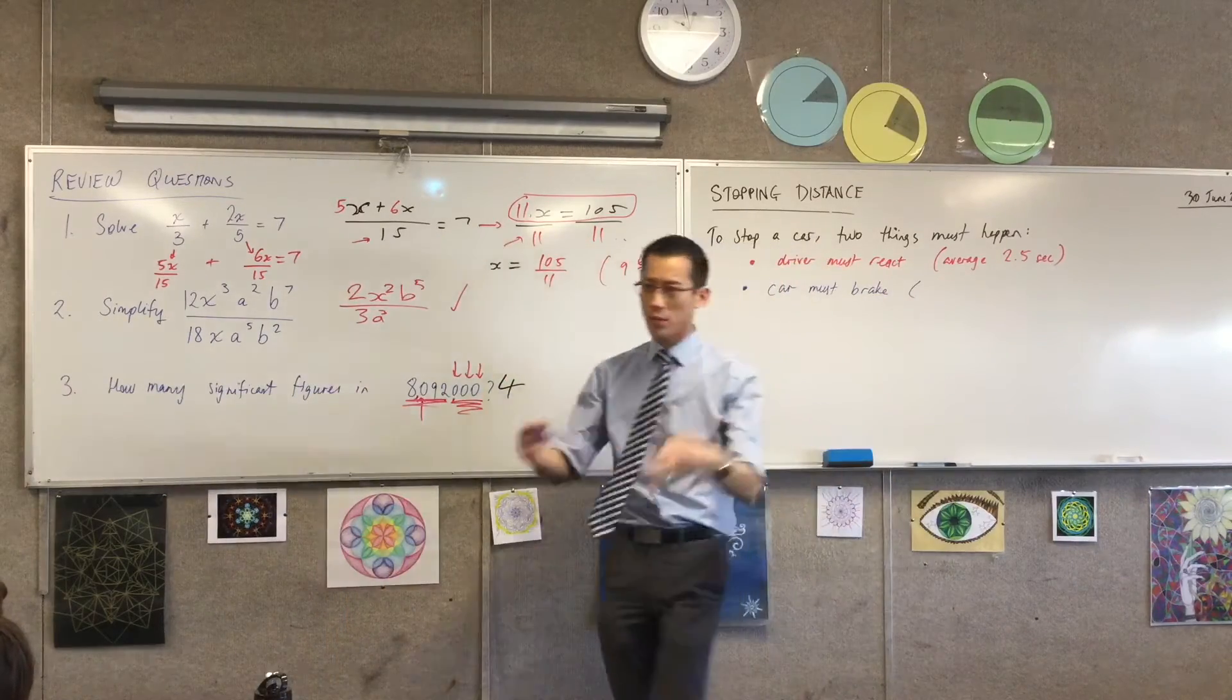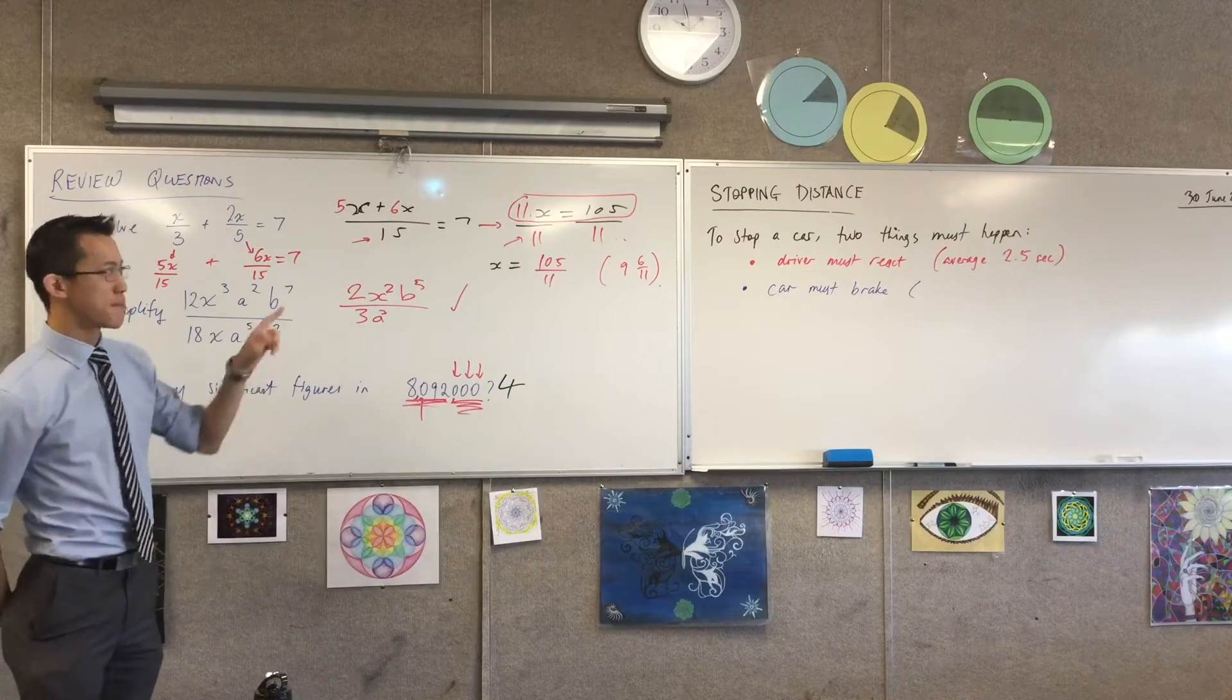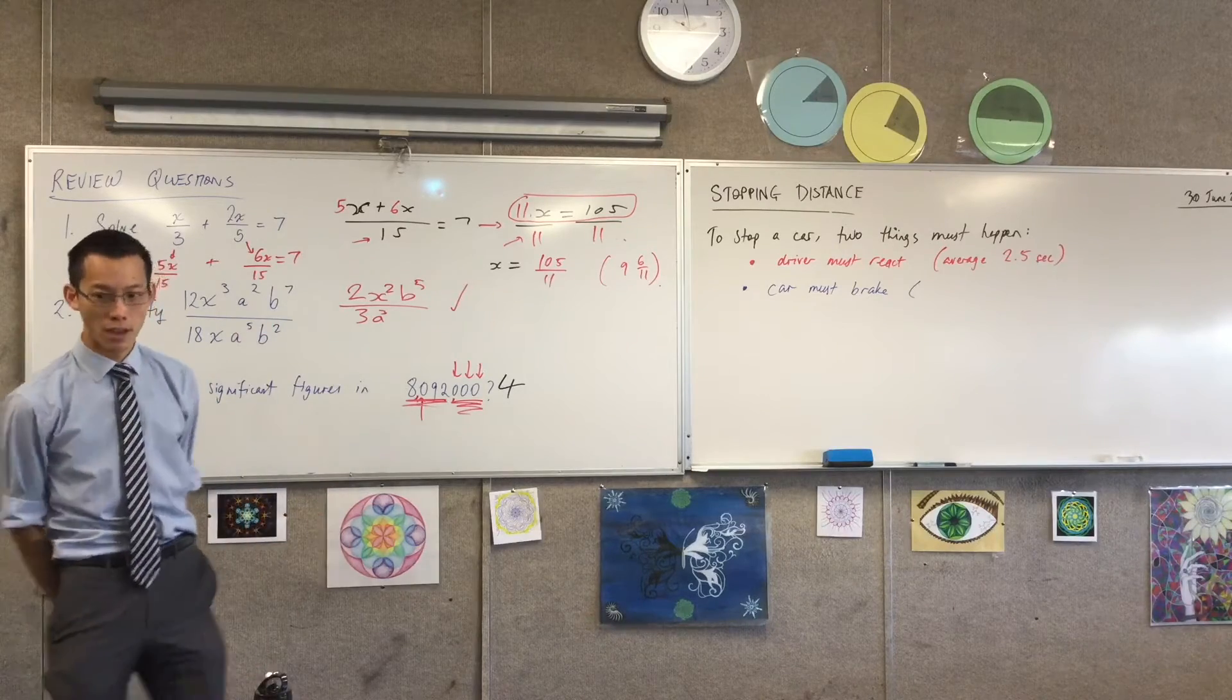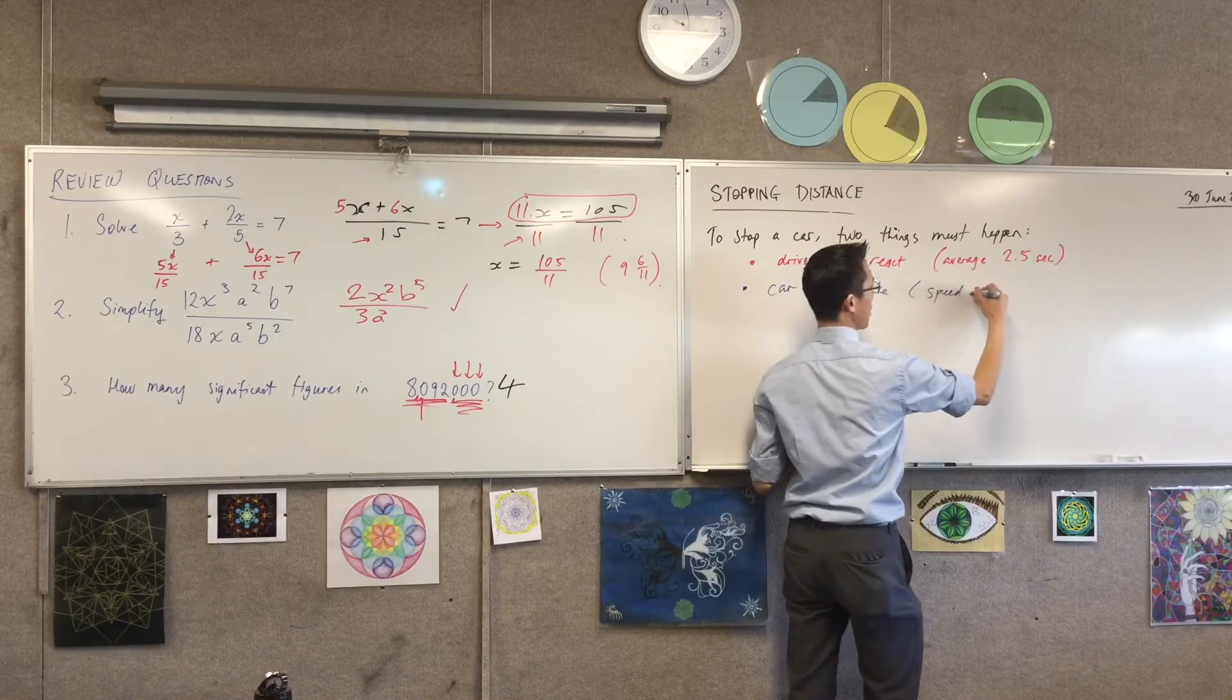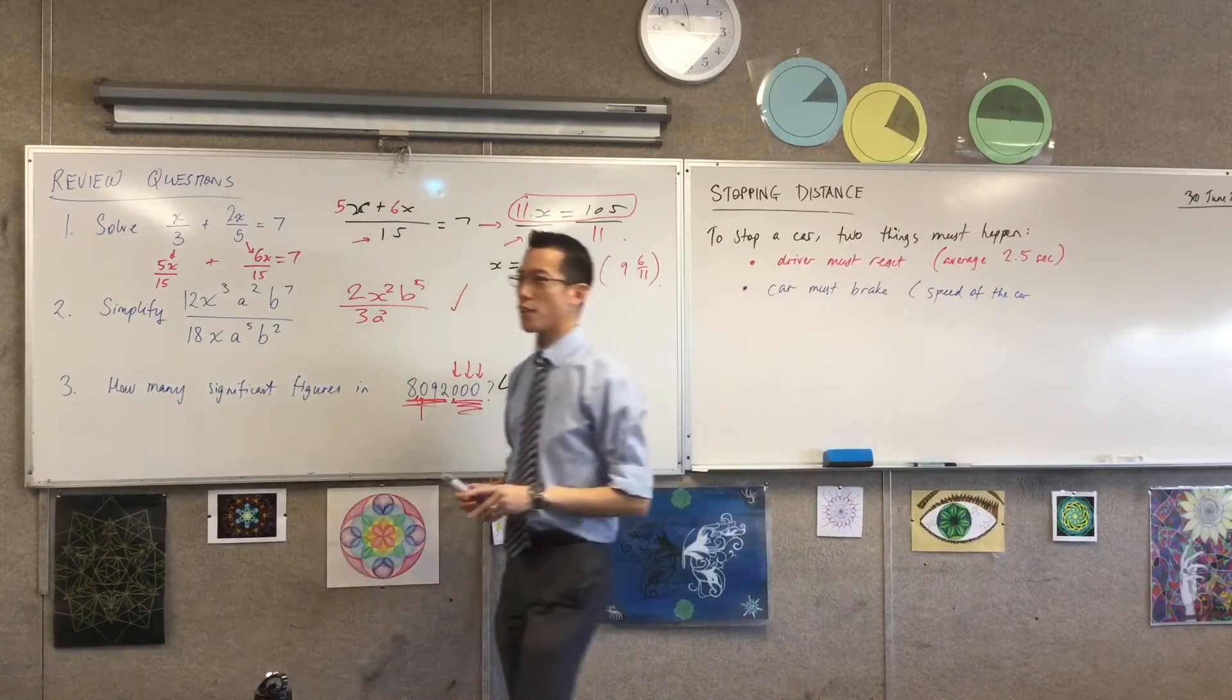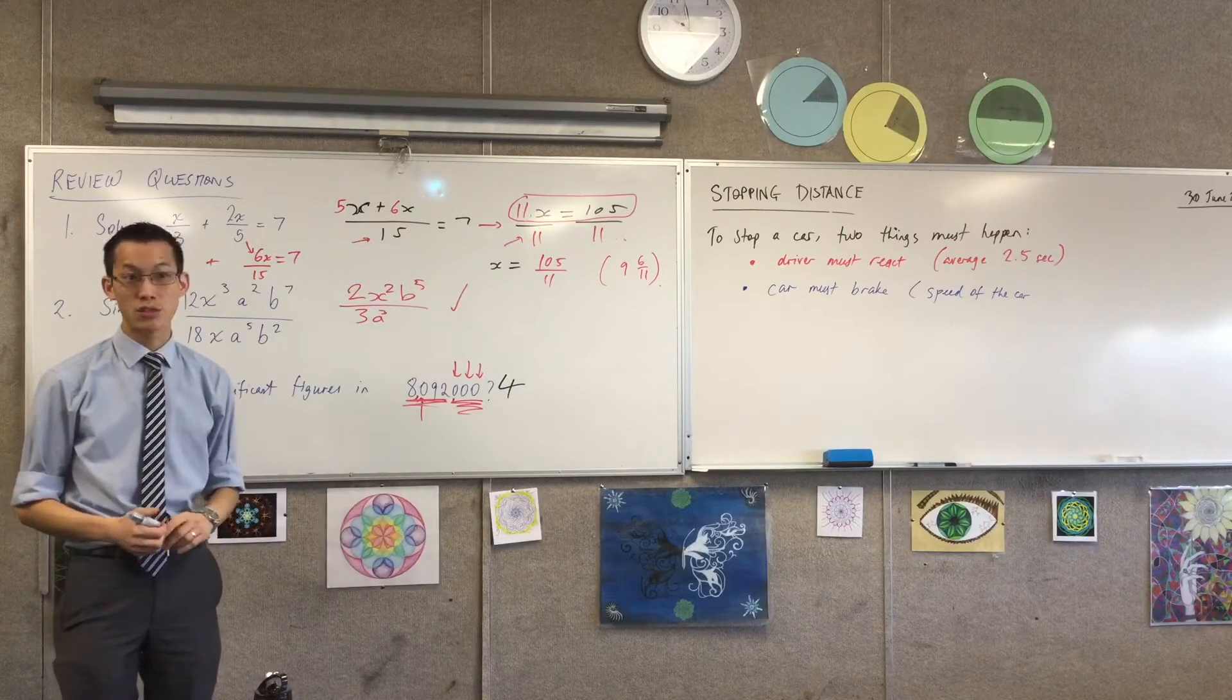Now in addition to that, the car has to brake. So this obviously also takes time and therefore results in distance. What kinds of things do you think the braking distance depends on? What kind of factors affect it? The speed of the car. Number one, how fast you're going, right? Speed of the car. Clearly, the faster you're going, the longer it will take you to stop the car.